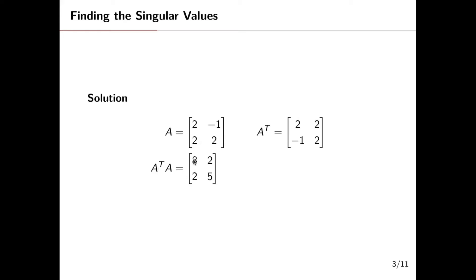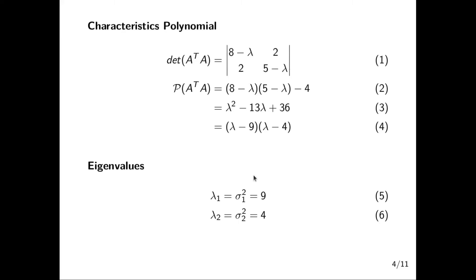We have our original matrix A here. The transpose can be seen here, so A-transpose times A will give us this matrix. From there we went ahead to find the determinant of the matrix as seen in equation one, and then we proceed to find the characteristic polynomial in equation three. From equation four, if you perform factorization, we get equation four, and we equate the whole thing to zero.